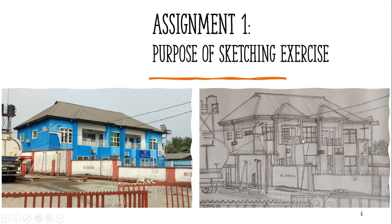I tried as much as possible to represent elements the way they are, though some — like the overhead water tank — I left white in the sketch even though it appears dark in color in the photograph. I purposely didn't want to add too much detail to some elements, so that you have a clear visual of the building itself without too much emphasis on those secondary elements. This is just an example to show what can be done when you have a building in front of you and you want to sketch it.